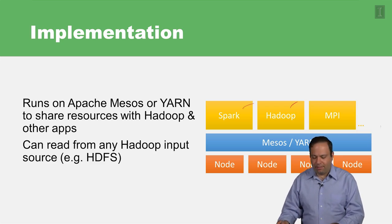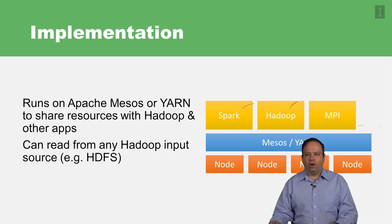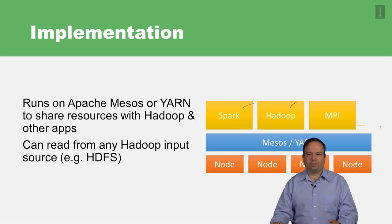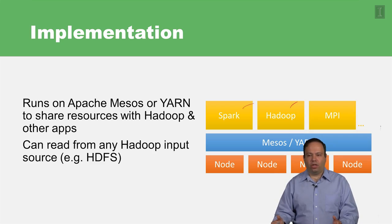It's kind of the same here in Spark as well. You have Spark running on top of a resource management framework — for example, YARN — or there's another Apache open source project called Mesos that can be used for Spark as well. So you can have different execution engines, being Spark or Hadoop, or maybe even MPI, running on top of a resource management framework like YARN, which in turn manages the physical nodes on the cluster.